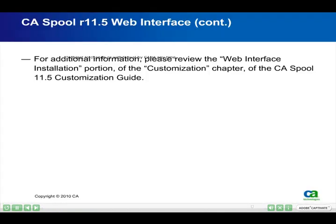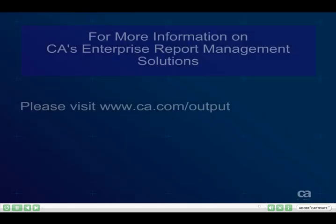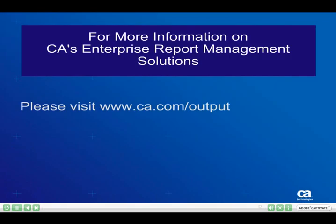For additional information, please review the Web Interface Installation portion of the Customization Chapter of the CA Spool 11.5 Customization Guide. For more information on CA's Enterprise Report Management solutions, please visit www.ca.com/output.